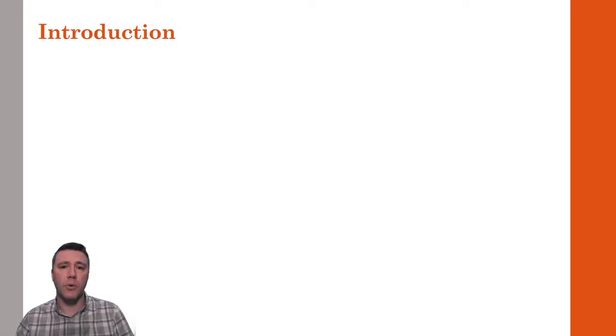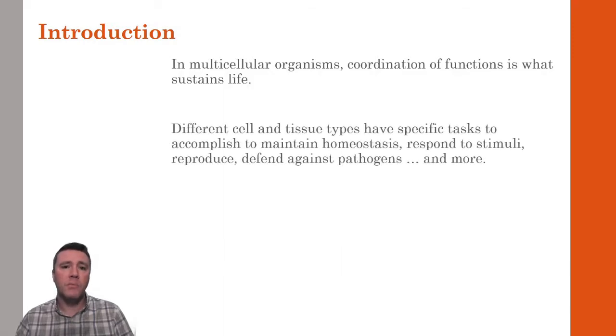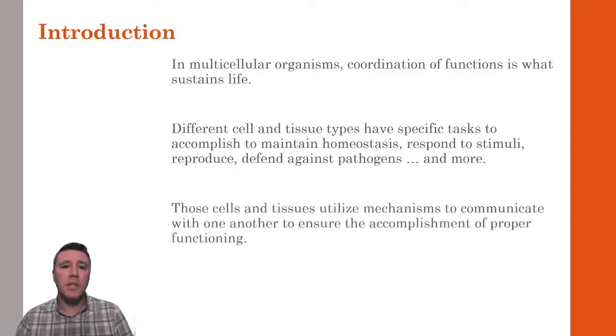In any single-celled organism, all of the functions of life are carried out by that single cell. However, for multicellular organisms where different regions of the organism's body or different cell or tissue types carry out specific focused tasks, coordination of those functions is necessary to sustain life. Some cell and tissue types are charged with responding to stimuli, others defend against pathogens, and yet others are responsible for obtaining and processing nutrients. In order for coordination to be established, cells throughout an organism's body utilize mechanisms that involve chemical communication to ensure proper functioning.